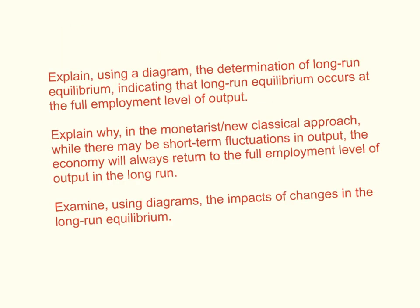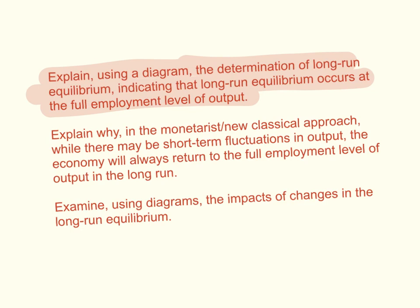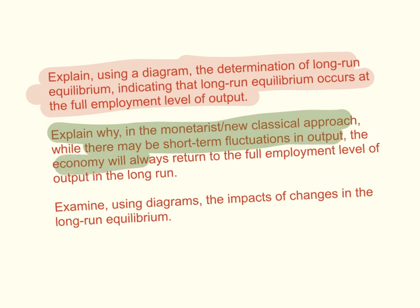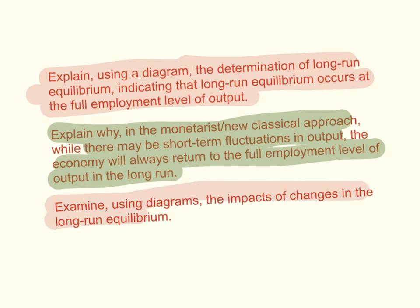The learning outcomes for this video: we're going to explain using a diagram the determination of long-run equilibrium, indicating that long-run equilibrium occurs at the full employment level of output. We're also going to explain why in the monetarist neoclassical approach there may be short-term fluctuations in output, but the economy will always return to full employment level of output in the long run. Then we're going to examine using diagrams the impact of changes in the long-run equilibrium.